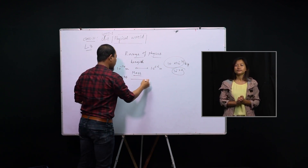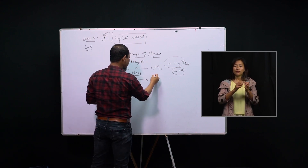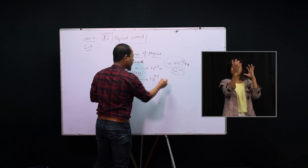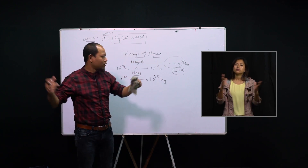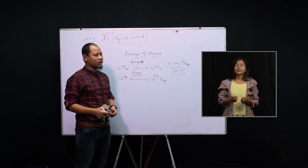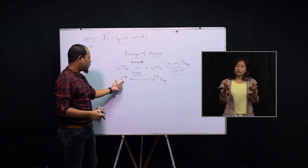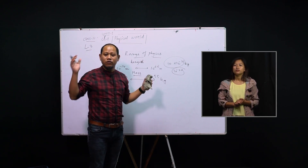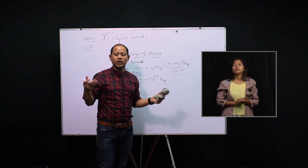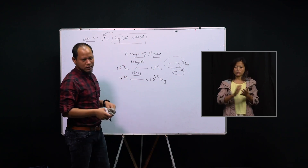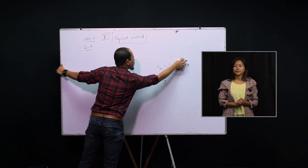We can also measure the entire mass of the universe, which is 10⁵⁵ kg. You can't imagine how large 10⁵⁵ is. This is the power of physics — this is the range of physics. We can measure the very small weight of very small elements, as well as the weight of the entire universe. We can define the range in terms of length, mass, and also speed. I'm giving you just two examples.